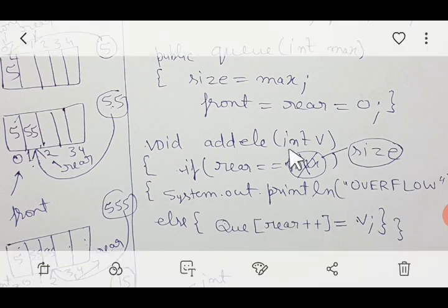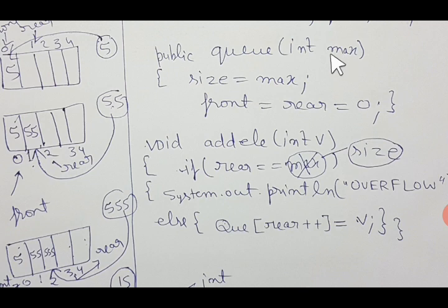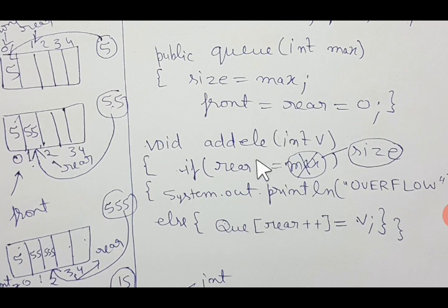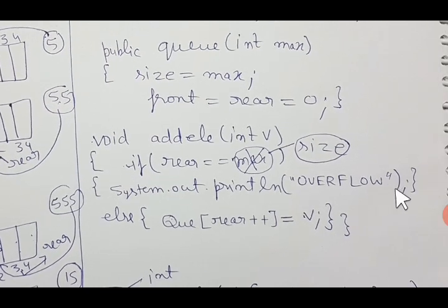In the addEle function, int v is passed as a parameter. If rear equals size, that means overflow — you cannot introduce a new element to the queue. Note: students make a common mistake of writing 'max' instead of 'size', but max is only a local argument to the constructor and cannot be used outside it. The data member 'size' was initialized with the value of max, so always use 'size' here. If rear equals size, it is overflow.